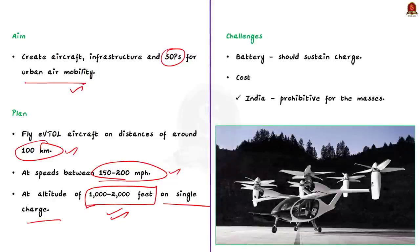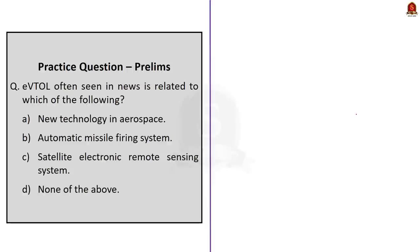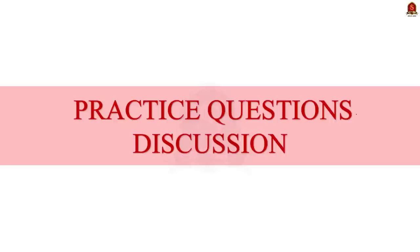Key challenges for eVTOL include battery technology that must sustain a charge for 100 km, and cost — in a price-sensitive market like India, prices might still be unaffordable for the masses even if Uber Air starts functioning in the next decade. That's all regarding this discussion. We saw what eVTOL is, how it functions, and the advantages and challenges associated with these aircraft.